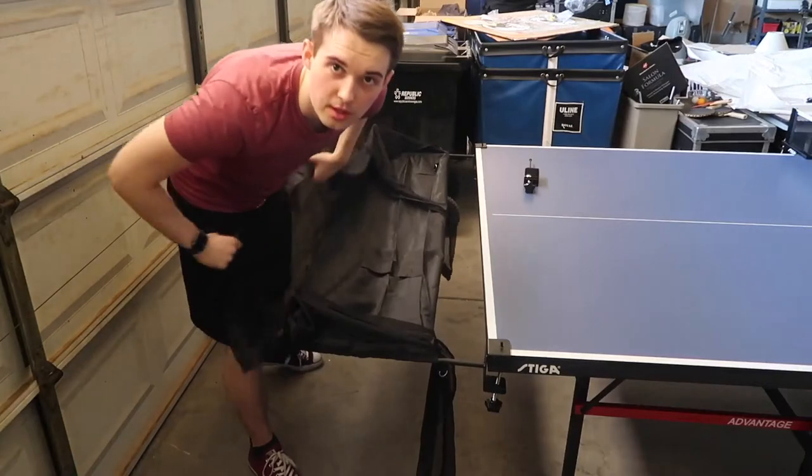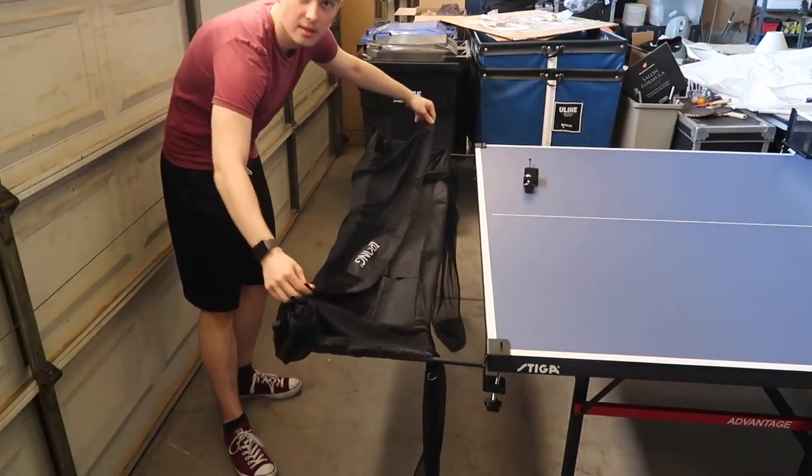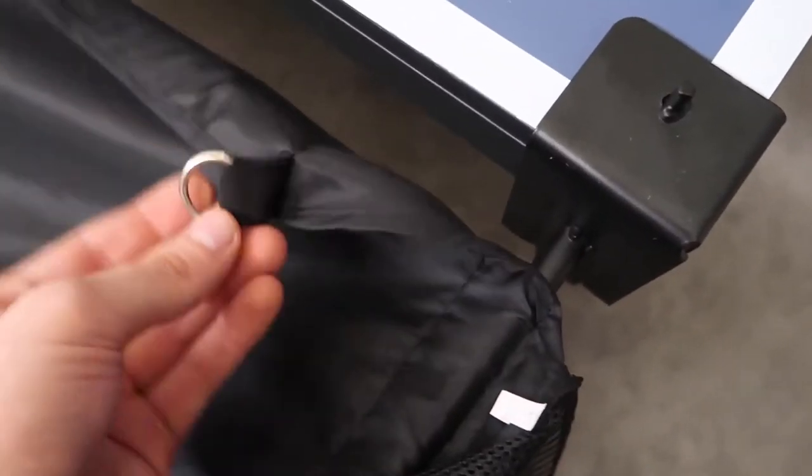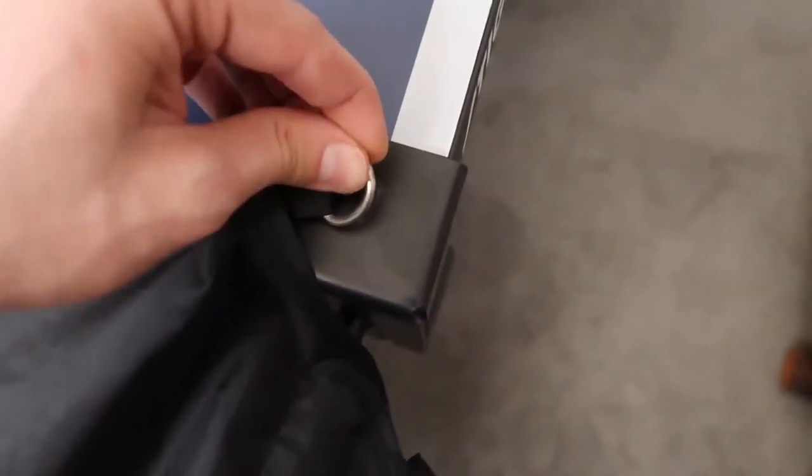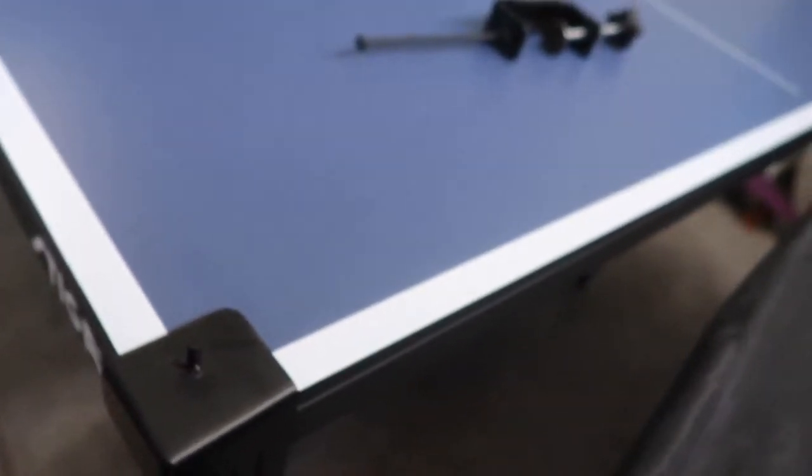And now it should look something like this, iPong logo in the back facing you. Now to keep these things from shifting around, they have designed a smart little technique. This little ring has a purpose. You're going to take this ring and you're going to clip it right onto this little tiny bracket right here, just like that. And we're going to do the same thing on this side. We're going to find our little ring and we are just going to clip it right there.